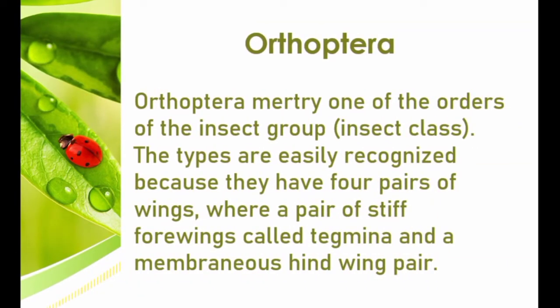Next is Orthoptera, which is one of the orders of the insect class. The types are easily recognized because they have four pairs of wings: a pair of stiff forewings called tegmina, and a membranous hindwing pair. They have enlarged hind femurs adapted for jumping, as seen in crickets and grasshoppers. In nature, Orthoptera species serve as predators, scavengers, decomposers of organic matter, natural enemies of other insects, or as pests harming crops and agricultural production.